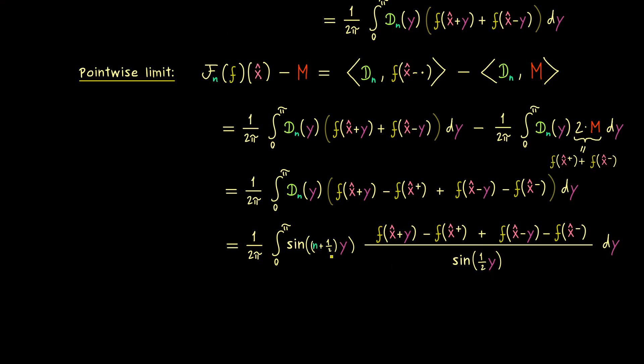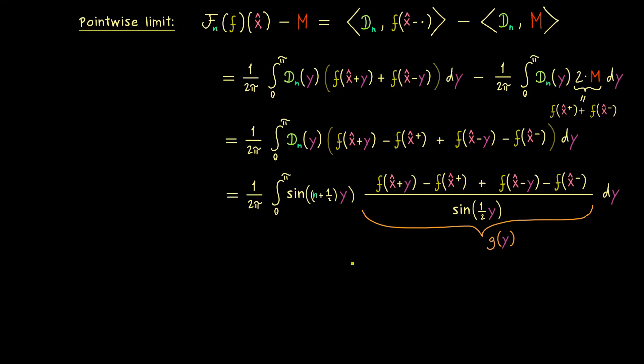And there the crucial idea is to break the Dirichlet kernel apart such that we only have to consider this function on the right hand side. And in order to make our notation shorter let's call this function g of y. And obviously our function g is also 2π periodic and well defined with the exception points given by this sine function again. However as always these exception points don't matter in the integral so you can define it however you want at these exception points.